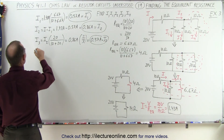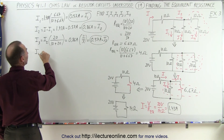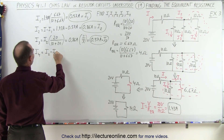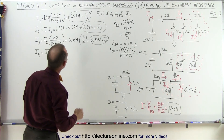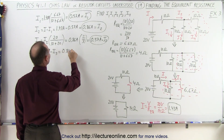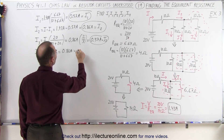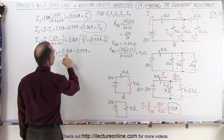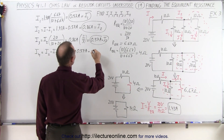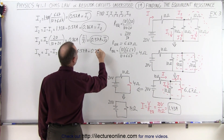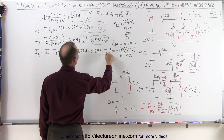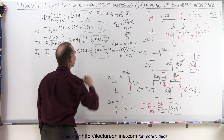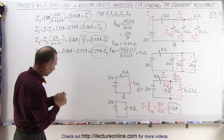Finally, I4 equals I2 minus I3: 0.86 amps minus 0.57 amps equals 0.29 amps. As a quick check — I3 plus I4 should equal I2, and sure enough, that is correct.